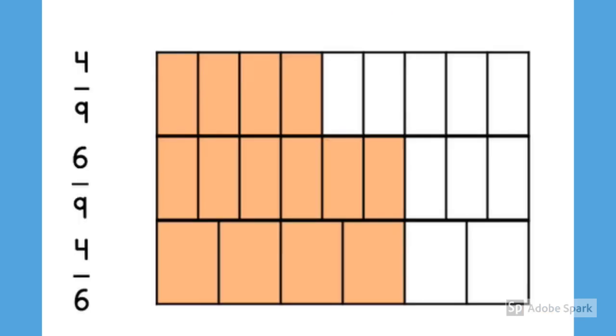So if we put all the bar models together, we can see that two of the fractions are equivalent fractions. Therefore, the odd one out is four-ninths.